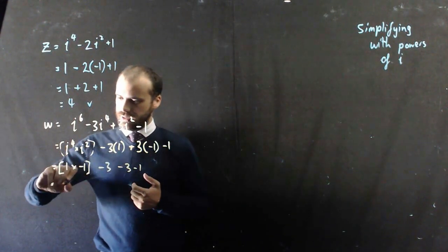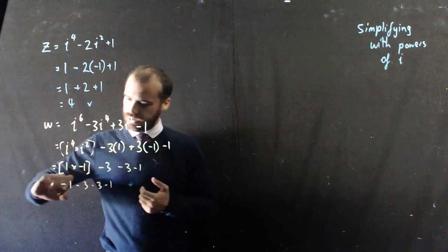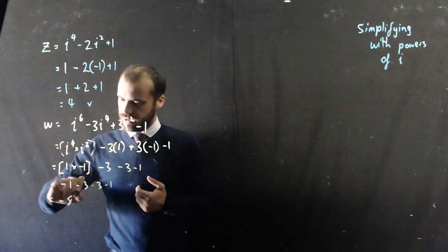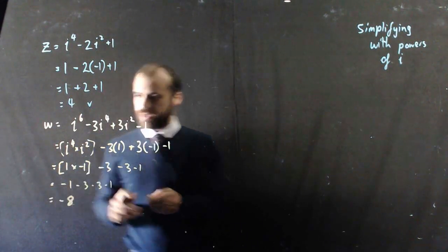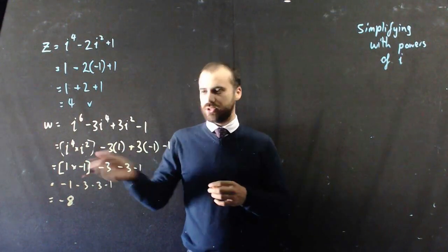So i squared is negative 1, negative 8. Alright, so again, real component, pretty straightforward.